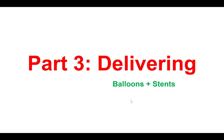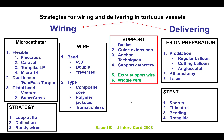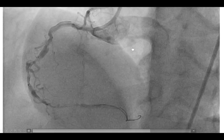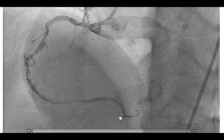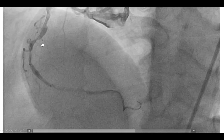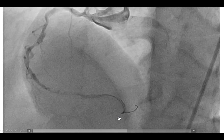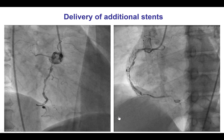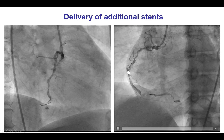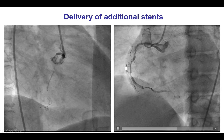Moving on to the third part: after the wire has been advanced to the distal vessel, how to deliver balloons and stents. The two key concepts are to have adequate support and to prepare the lesion very well. Sometimes, if long stents cannot be delivered, use shorter stents and newer thin-strut stents that are more likely to deliver. In one case with significant tortuosity, a stent was successfully delivered using a simple buddy wire technique, and then additional stents were advanced to cover the lesion.